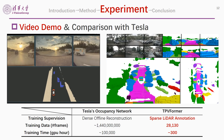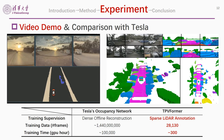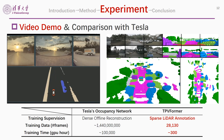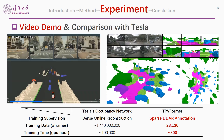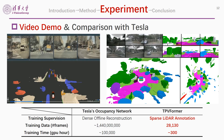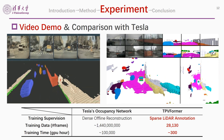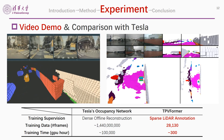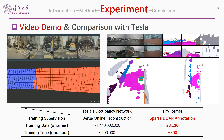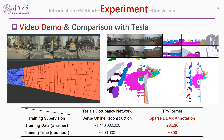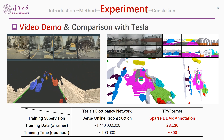Our TPVFormer uses only sparse lidar annotation and supervision during training, while Tesla requires dense offline reconstruction. Also, Tesla uses much more training data and GPU hours than TPVFormer, while TPVFormer is readily reproducible with only one day on eight GPUs.